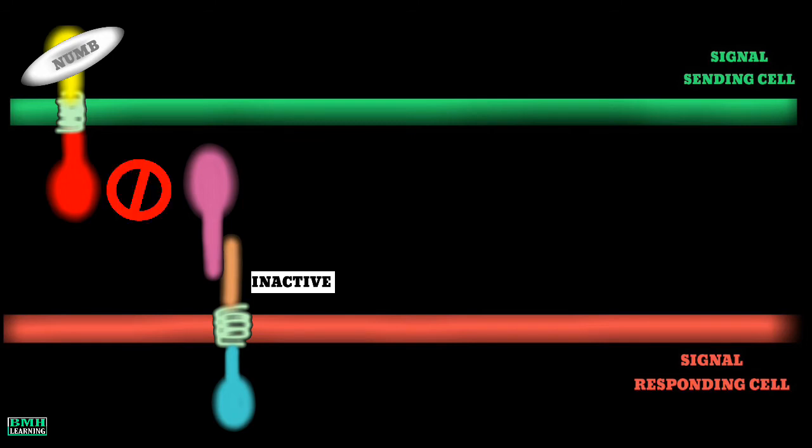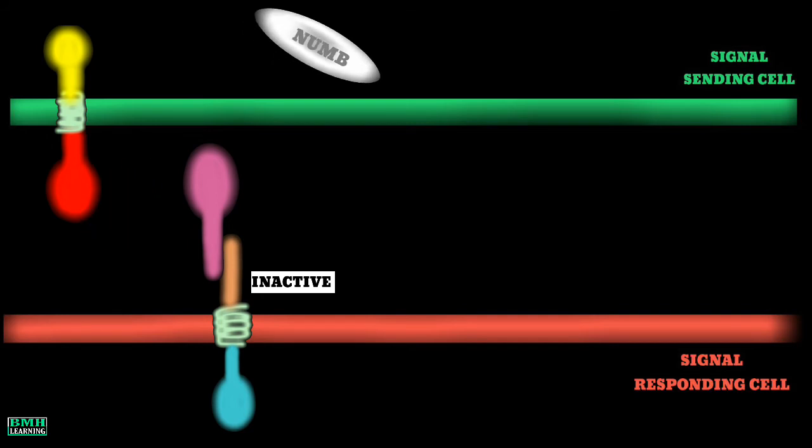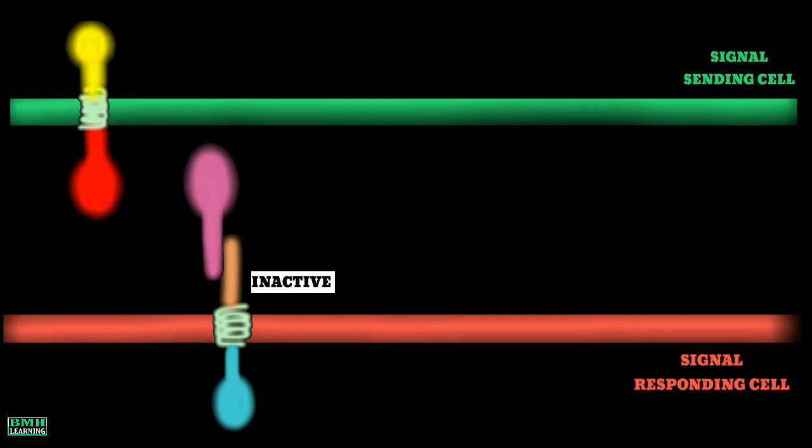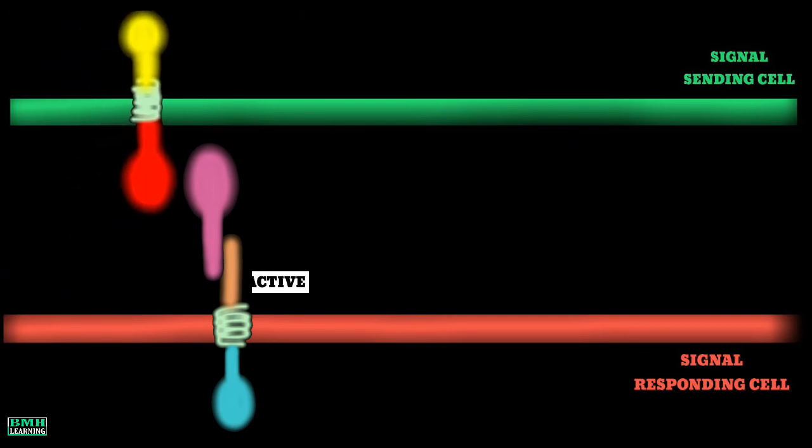Due to some mechanisms not discussed in this video, Numb is released, which frees the ligand delta. The freed ligand then binds the notch receptor. Following ligand binding to receptor, the notch receptor on the responding cell experiences two additional proteolytic cleavages in a prescribed manner.